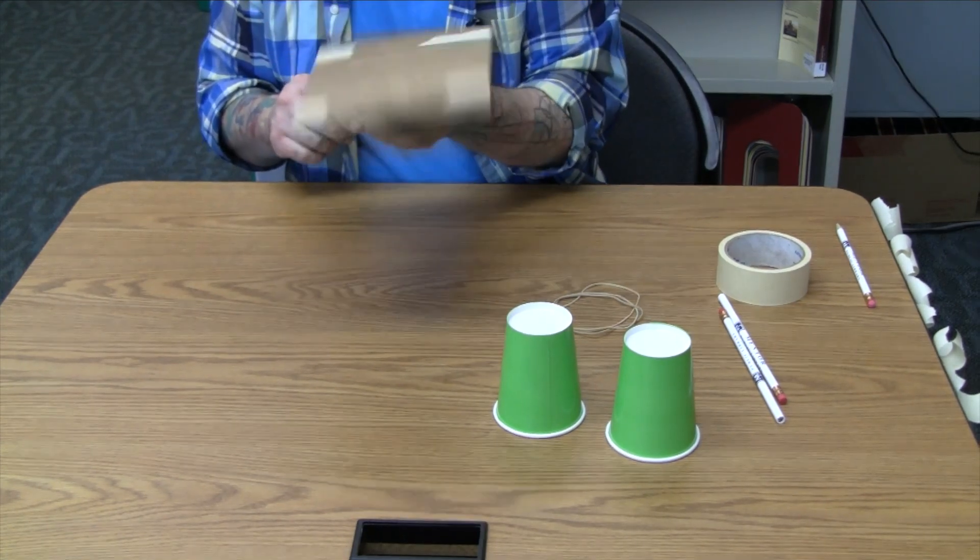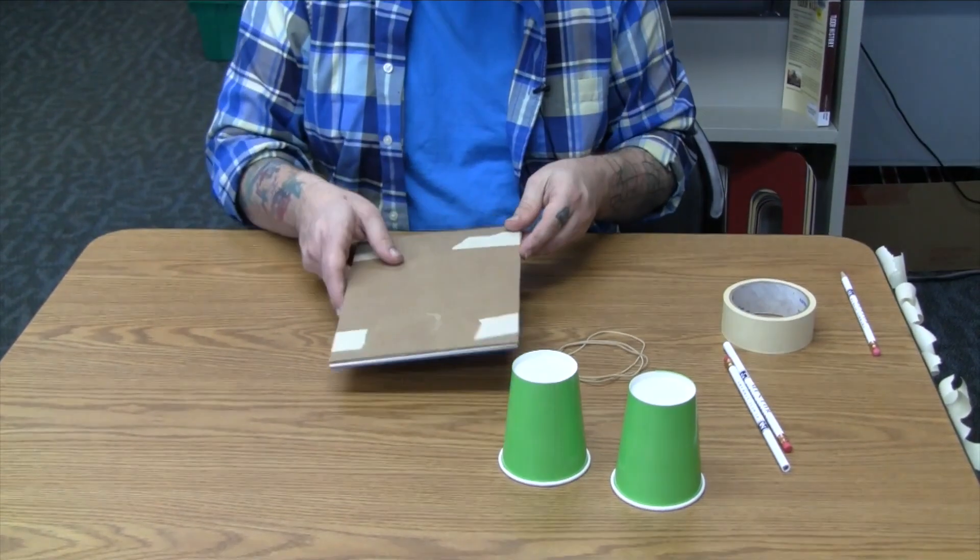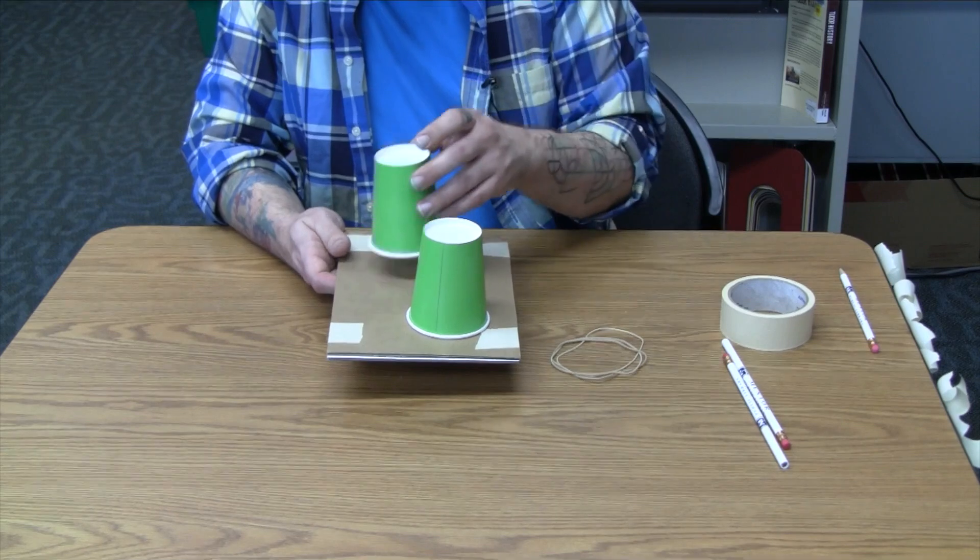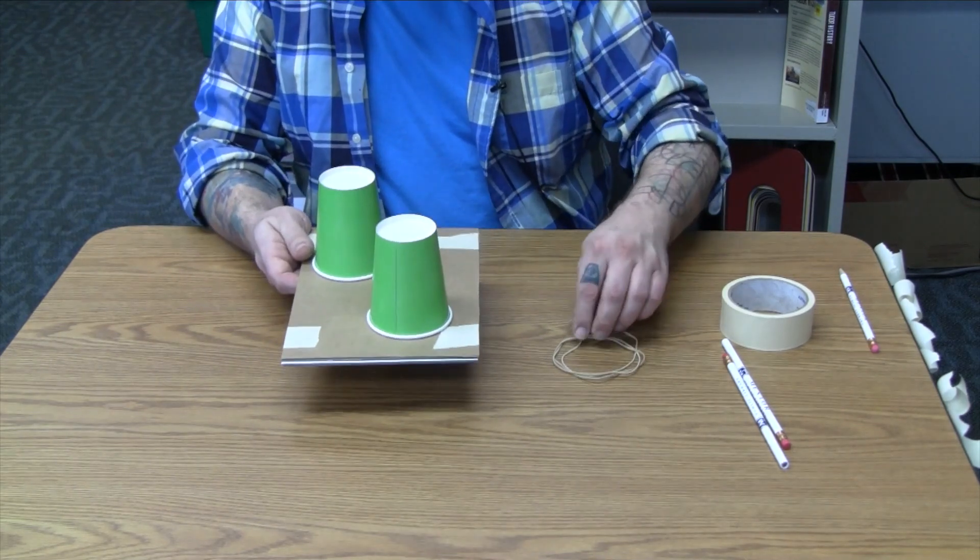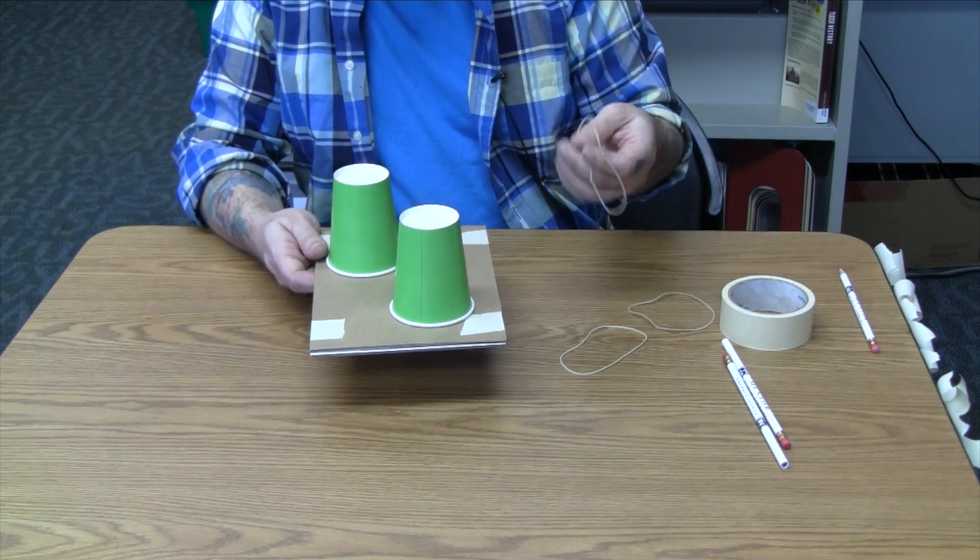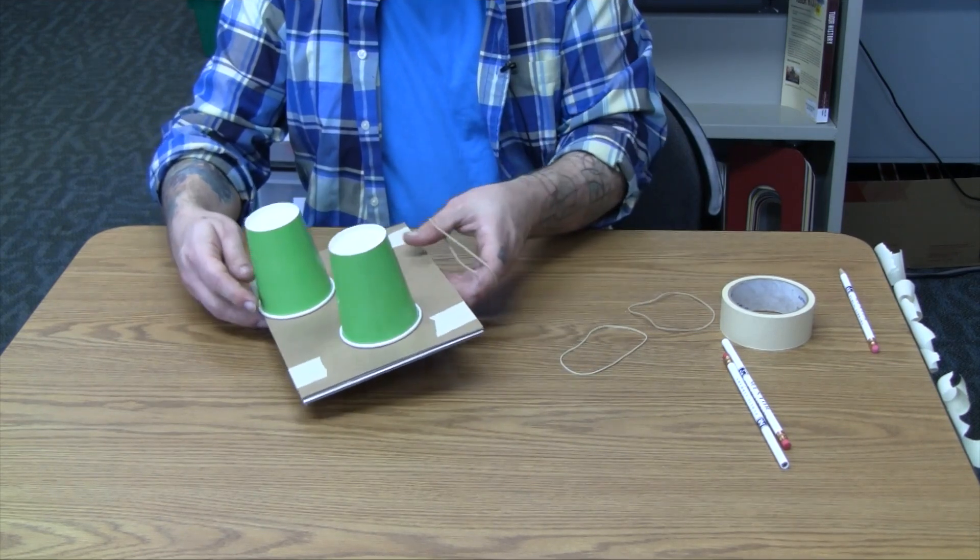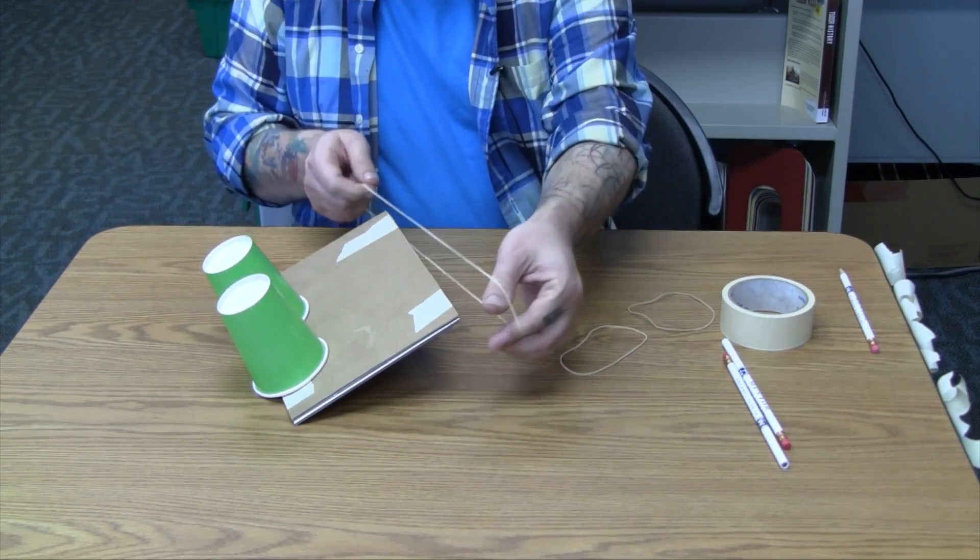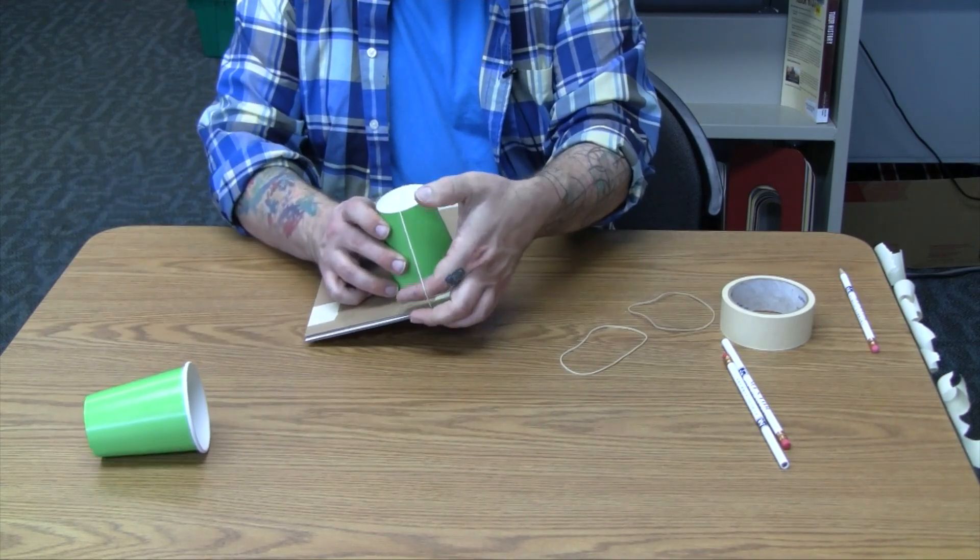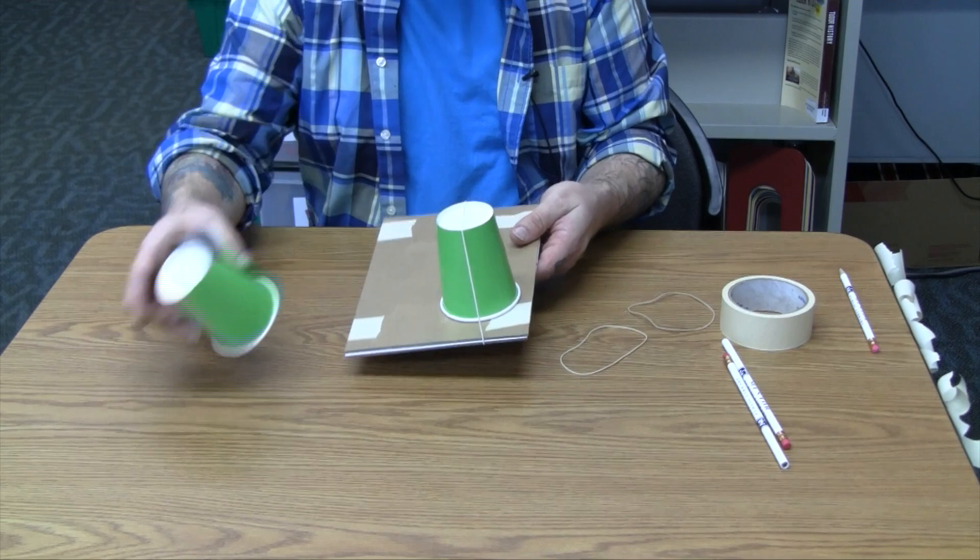That way you can hold it like so, move it around. And then your cups, you can place on opposite sides on the other side. And you take your rubber bands and you want bigger ones, so you can stretch them out over the length of it.